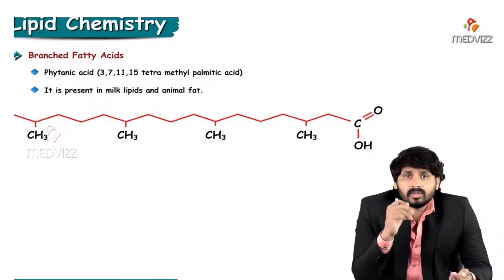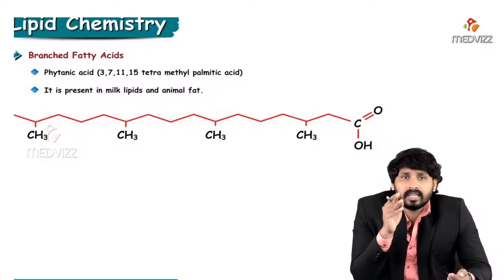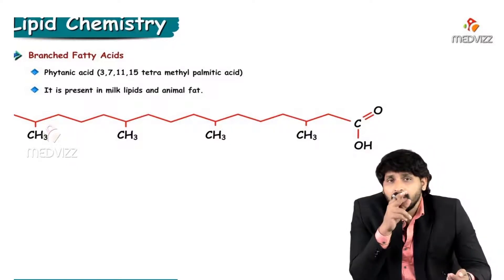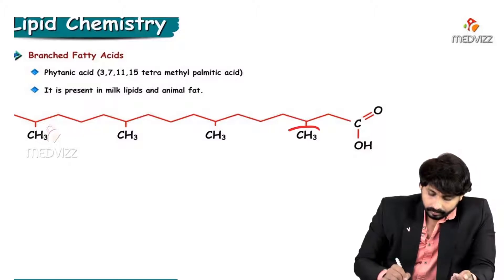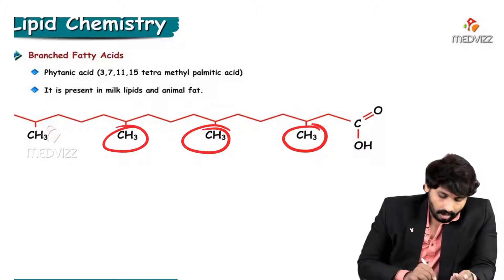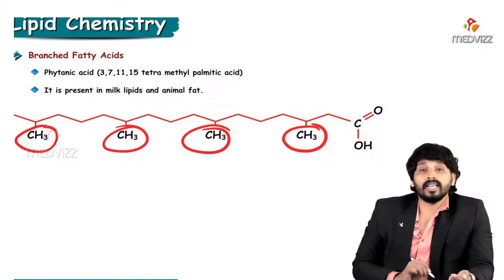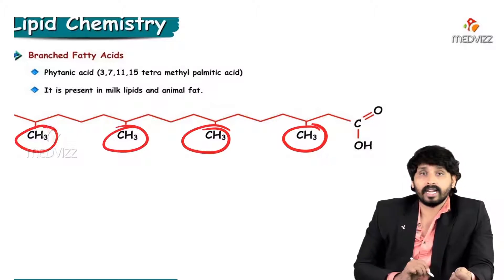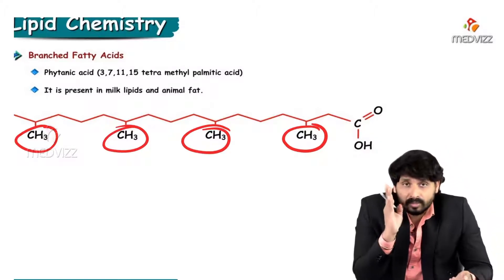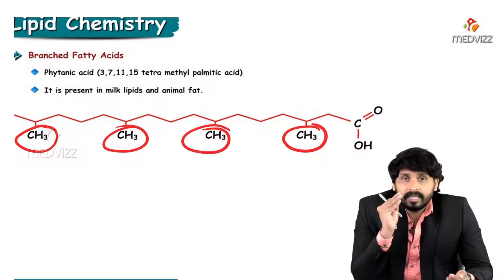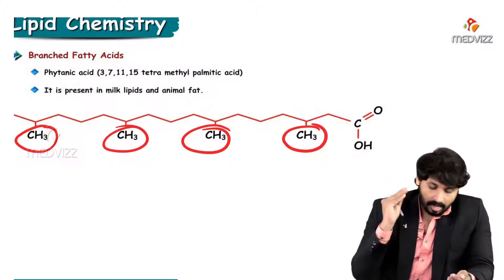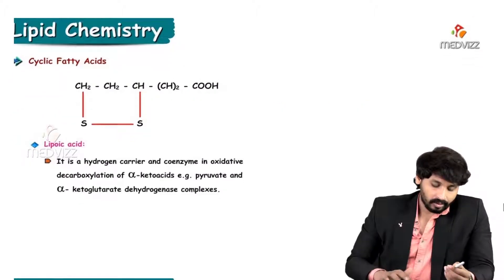Coming to branched fatty acids: phytanic acid, also known as 3,7,11,15-tetramethyl palmitic acid. The branching means at carbons 3, 7, 11, and 15 there is addition of a methyl group — four methyl groups in total, hence tetramethyl palmitic acid. It is present in milk lipids and in animal fat.